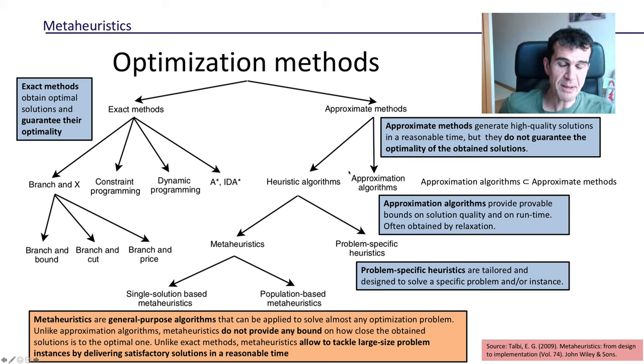Metaheuristics, as we've seen, do not guarantee providing the optimum, so they belong to this second class of optimization methods that is called approximate methods. Here, these approximate methods may provide high quality solutions in a reasonable amount of time, but they do not guarantee the optimality of the obtained solutions.